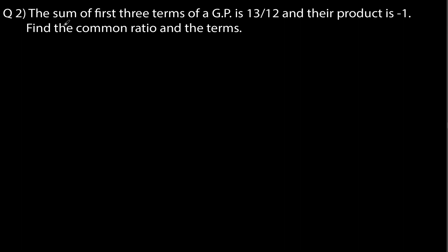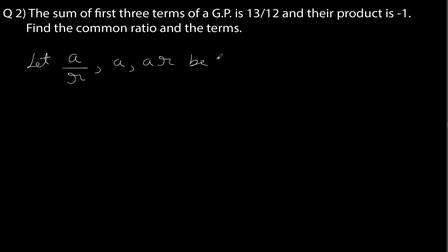Let us have a look at this example. It says: the sum of the first three terms of a GP is 13/12 and their product is minus 1. Find the common ratio and the terms. There is a trick in this question: whenever you are given that the product of three terms is known, assume the three terms as a/r, a, and ar. The ratio here is r — multiply by r to get from one term to the next. So these three terms are in geometric progression.